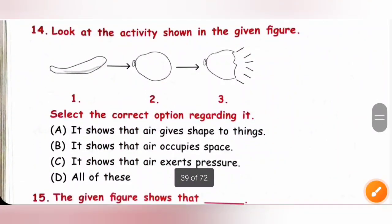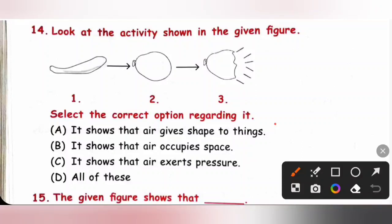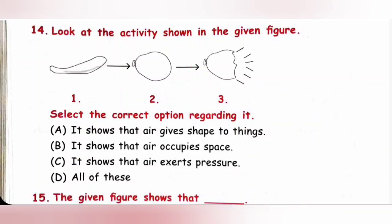Question 14: Look at the activity shown in the given figure. Please pause the video to check the figure. The figure shows that air gives shape to things, air occupies space, and air exerts pressure. All options are correct. Option D is the correct answer.